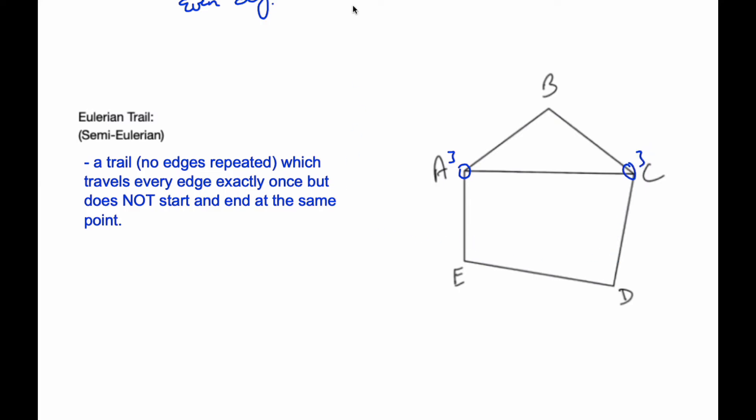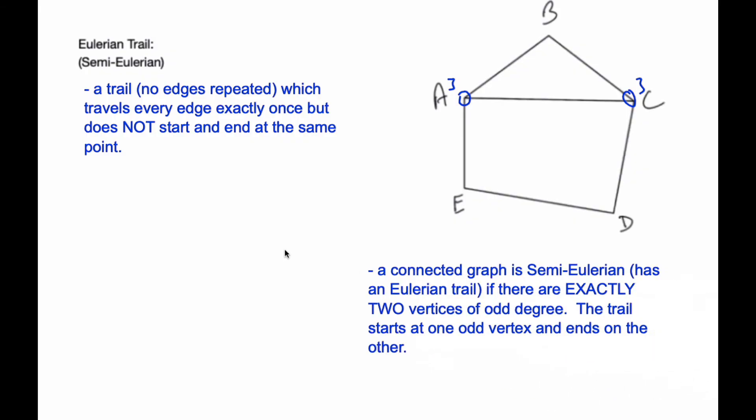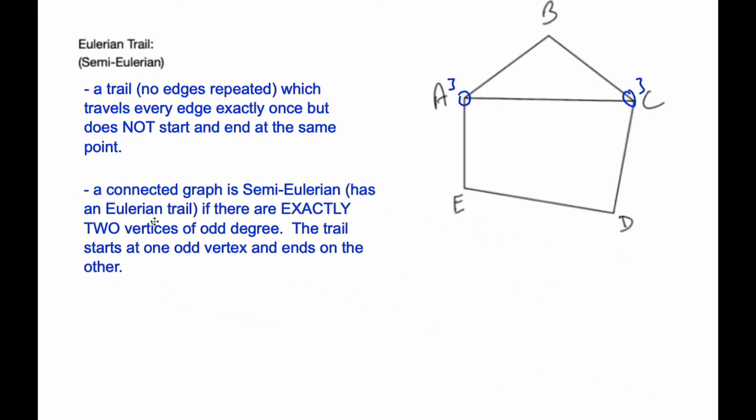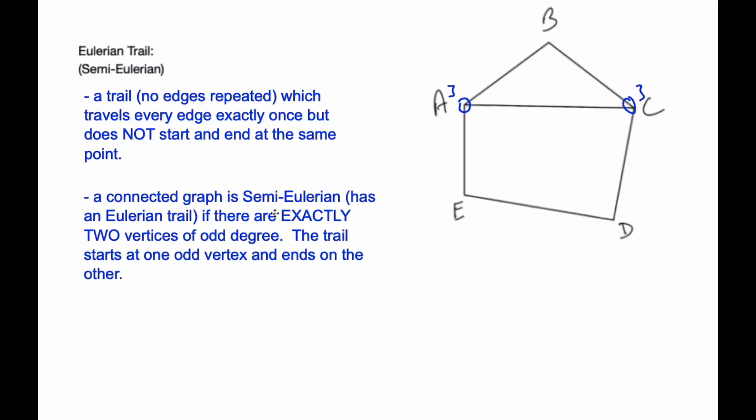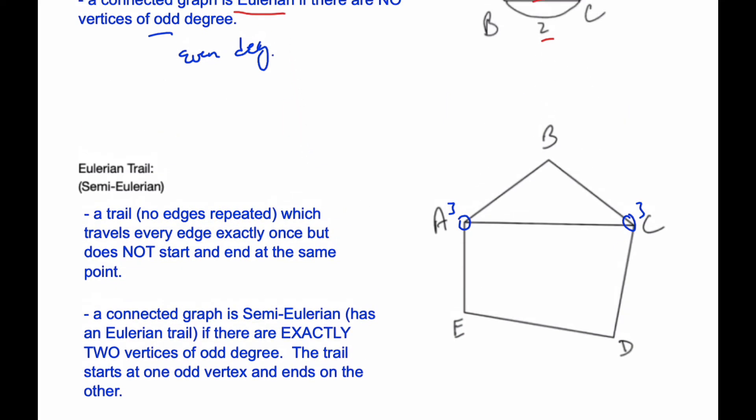And so the key to this is, if it's going to be semi-Eulerian, it has exactly two vertices that are odd, and the trail has to start and end on these odd vertices. So if I'm going to make this semi-Eulerian trail, I'm going to start at A or C, so I'm going to start here at A.